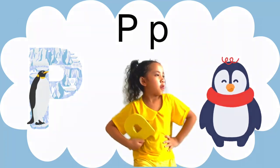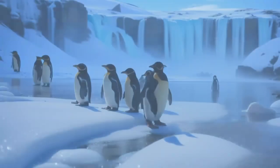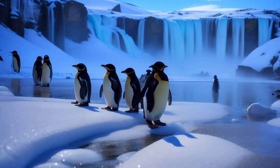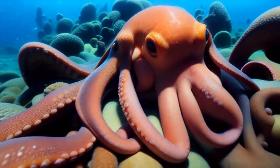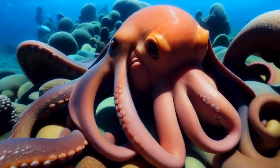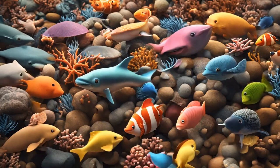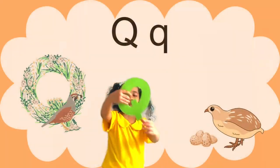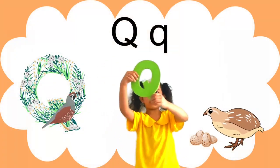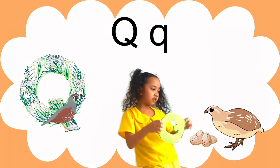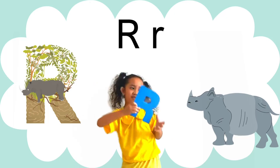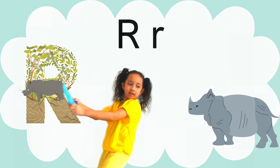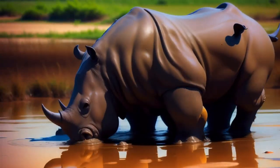Animal alphabet, learn and sing with glee. So many creatures, wild and free, come join the jamboree. Q is for quail, with a horn on his head.